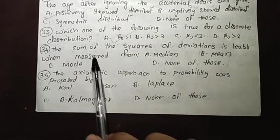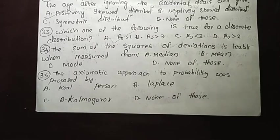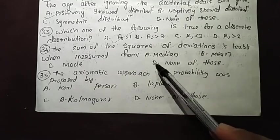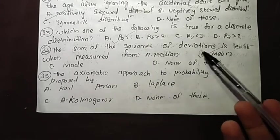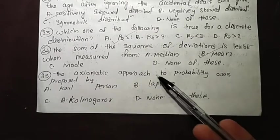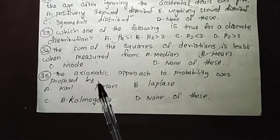The sum of squares of deviations is least when measured from the mean. Option B is the answer.